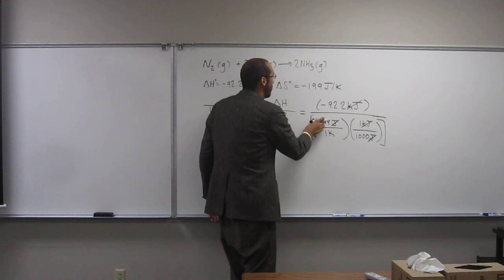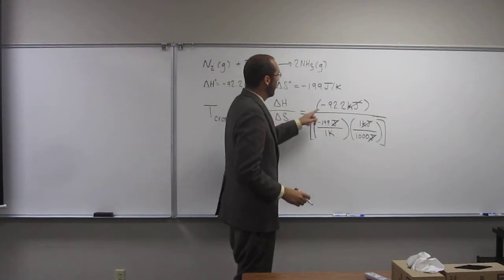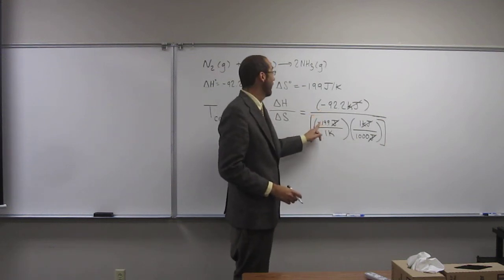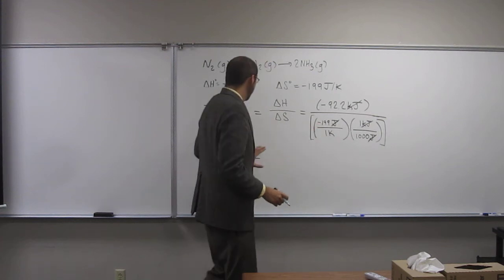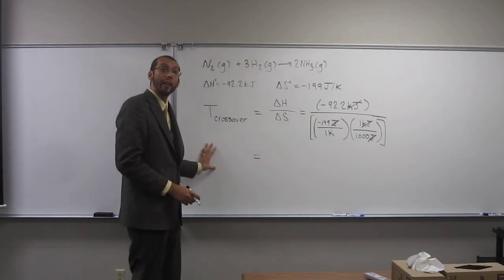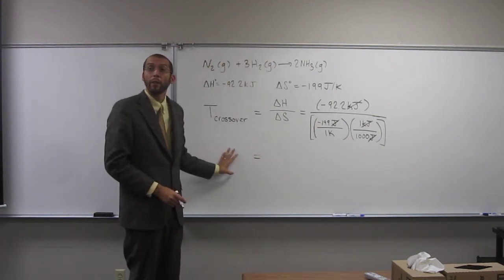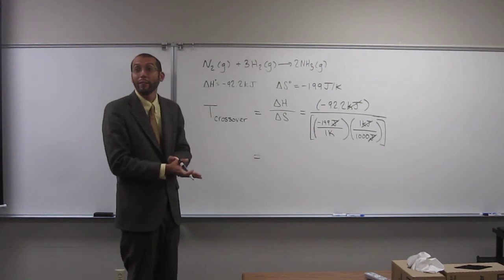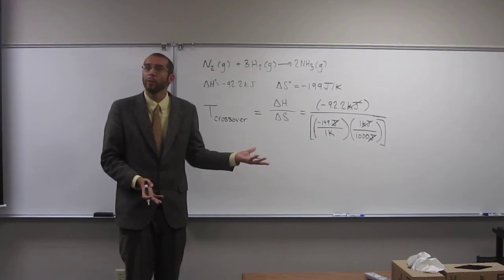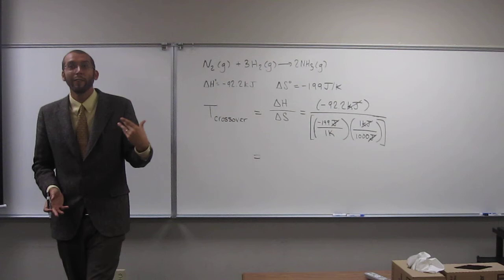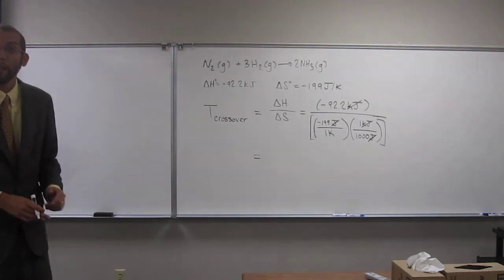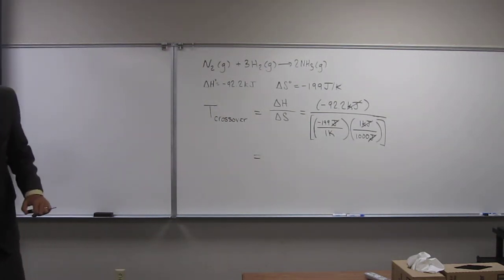And it's a good thing we have a negative there and a negative there, because temperature here cannot be what kind of numbers? Negative numbers. So they're going to have to cancel out. Why can't there be negative numbers? Because Kelvin is always positive. Kelvin is always positive. So let's just plug and chug now.